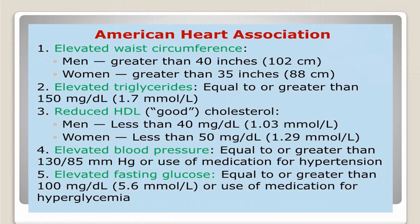The American Heart Association has the same criteria but presented differently: elevated waist circumference — in men more than 102 cm or 40 inches, in women more than 35 inches or 88 cm; elevated triglyceride more than 150; reduced HDL — in males less than 40 and in women less than 50; blood pressure equal to or greater than 130/85 or use of medication for hypertension; and elevated fasting glucose equal to or greater than 100 or use of medication for hyperglycemia. These are the five criteria considered by the American Heart Association.